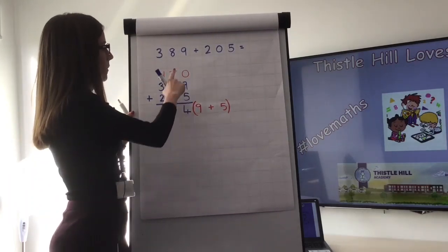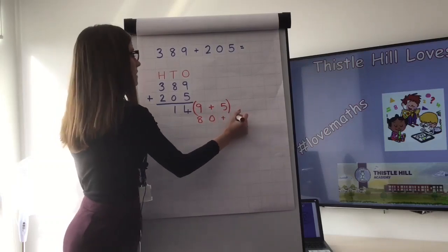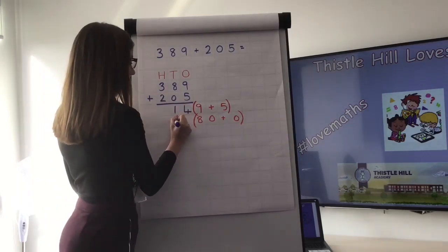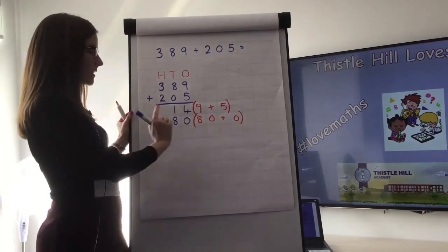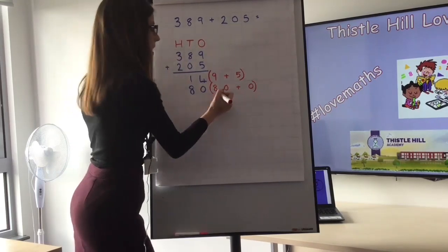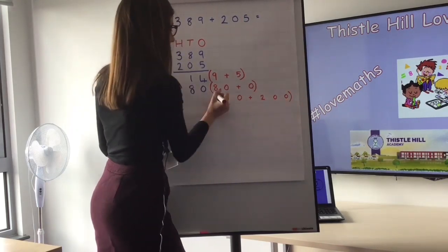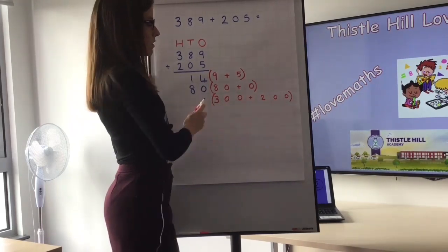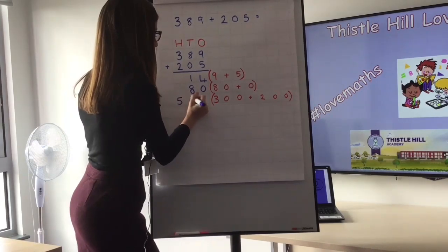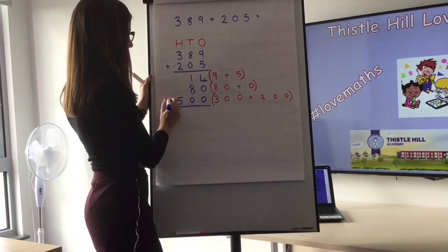Moving to the tens column, we have 80 and we're adding zero to it. 80 add zero is still 80, and because 80 has eight tens we place it there. Then in the hundreds column we've got 300 add 200, which we place in brackets. 300 add 200 is 500, so we place 500 in the hundreds column and draw a line underneath ready to add.